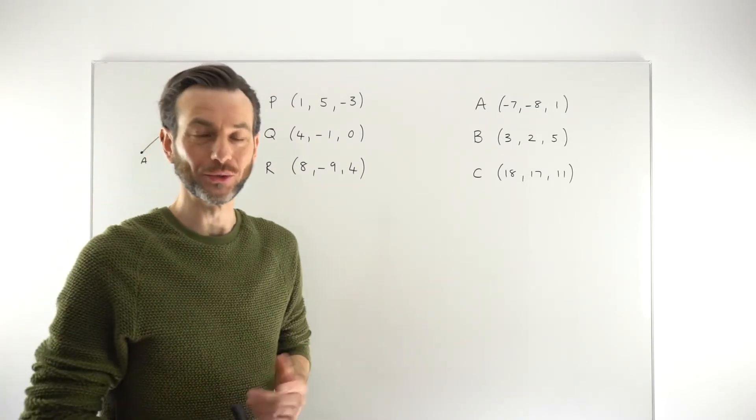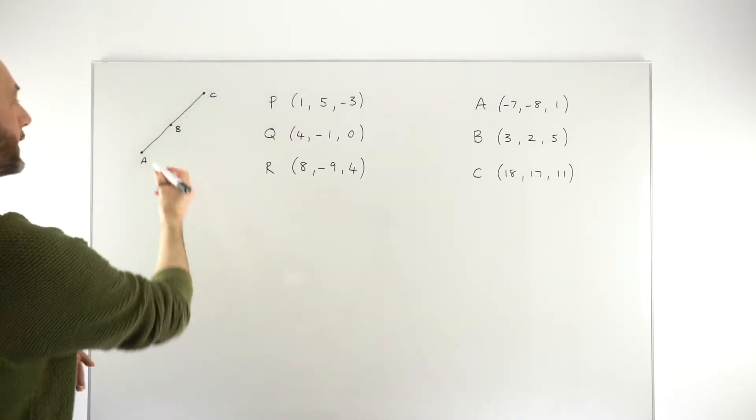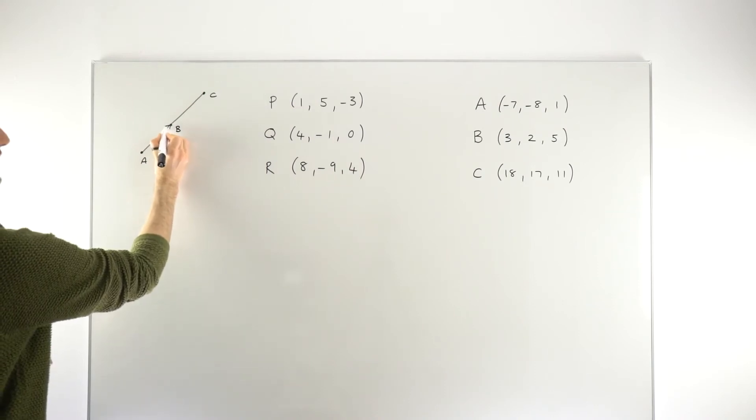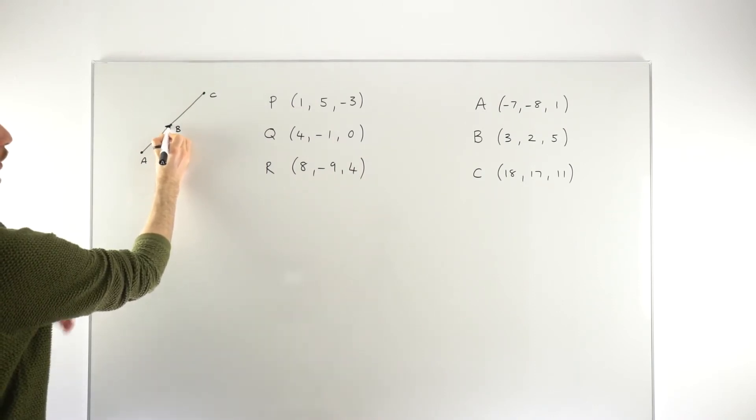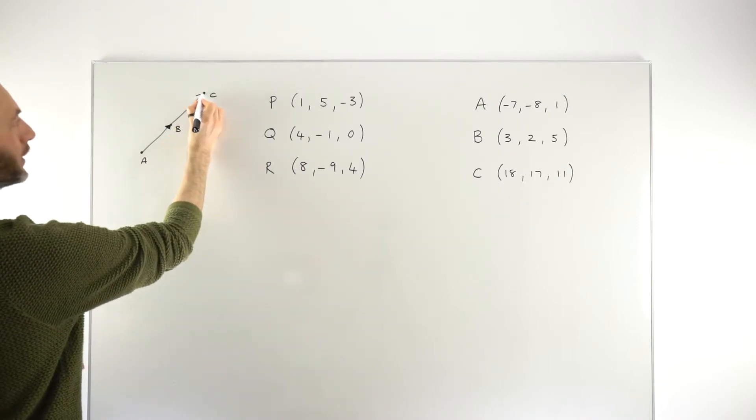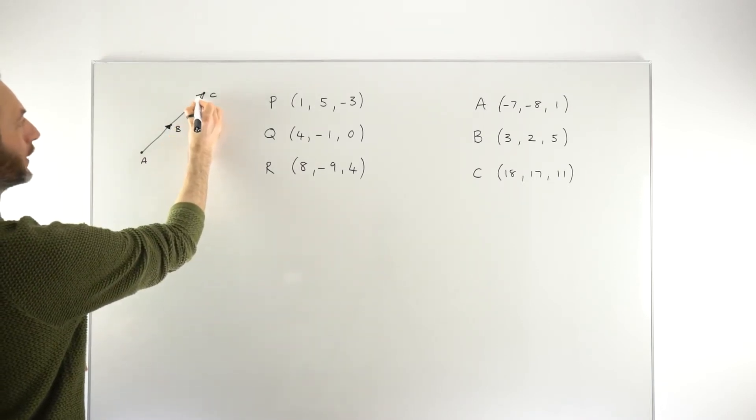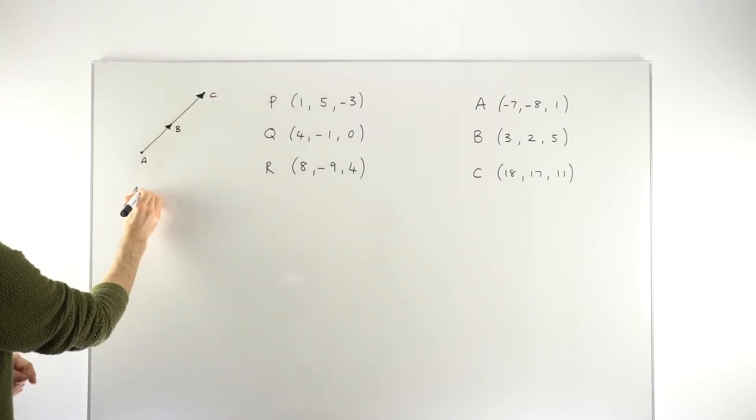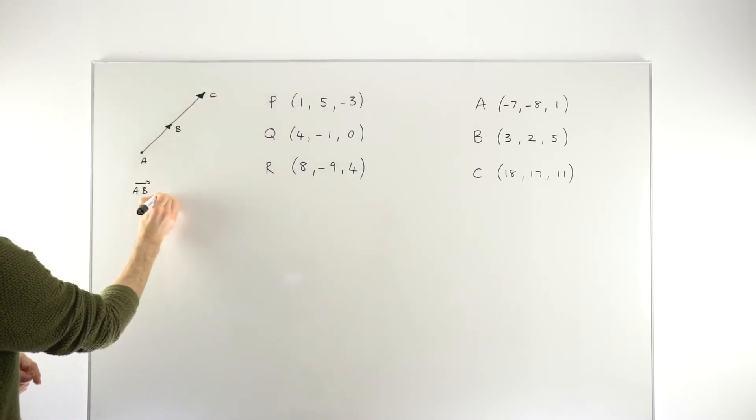So the first thing we're going to do is we're going to split this line into two vectors. So we're going to make the vector AB, so the vector from one of the endpoints to the midpoint, and then the vector BC. So just basically going along your line, splitting it into two vectors. So we've got vectors AB and BC.